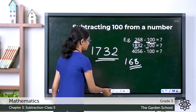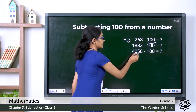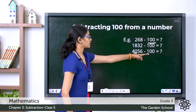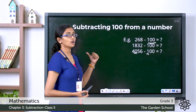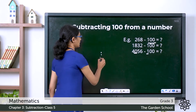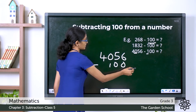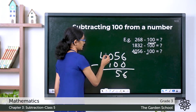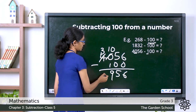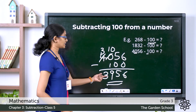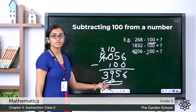Now the third number: 4,056 minus 100. Here the hundreds digit is less than the hundreds digit of the subtrahend. So what do we do? We have to regroup, and when you do that, the digits to the right of it will also change. Let's work through 4,056 minus 100: no change in the thousands digit, and here we regroup the hundreds. So it is 10 minus 1 is 9, then bringing the 56 down. The digits in the hundreds and thousands places changed because we had to regroup.